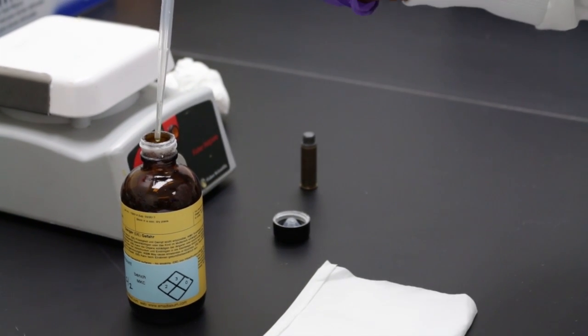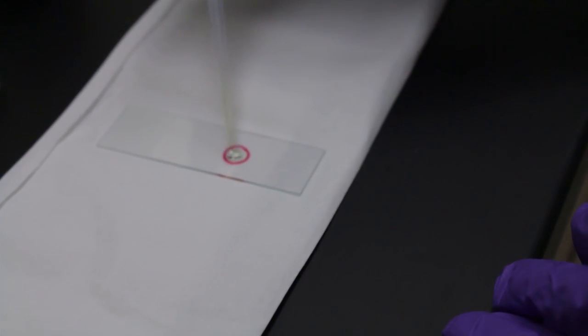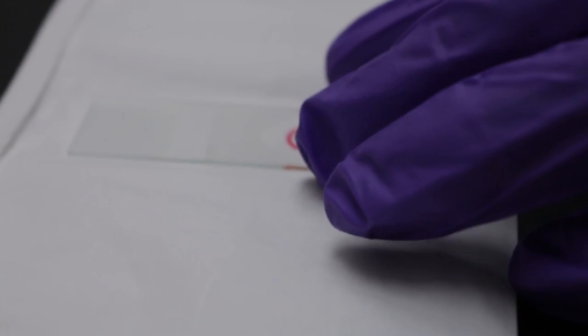Pop this back on here and that dries off the ethanol. Then what we do is we put a drop of what's called permount - it's a type of glue - and then you put a cover slip on it, and that allows you to be able to see it underneath the microscope. It protects what's on that microscope slide.